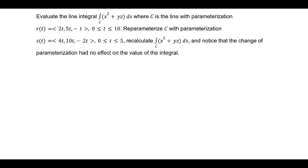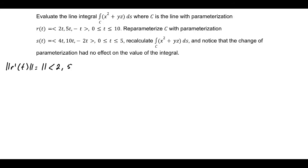First, note that the parameterization gives us an x, a y, and a z value that we'll substitute into our integral, and because we have boundaries on t, we can set up an integral, as long as we note that we'll have to multiply by the magnitude of r prime of t. The magnitude of the vector angle bracket 2, 5, negative 1 is the square root of 30.